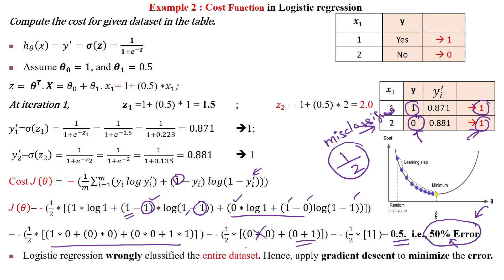Since the cost is 50%, we must apply gradient descent to minimize this cost by updating the parameter values θ through multiple iterations. Thanks for watching.